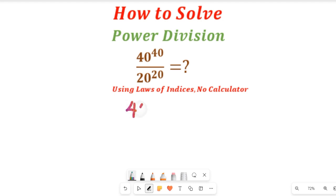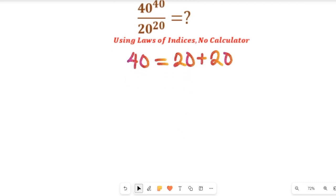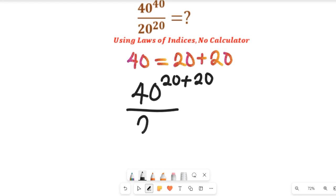Now if you remember that the power of 40 can still be equal to 20 plus 20—20 plus 20 will give us 40—so that means we can simplify the powers of the numerator. That can give us 40 to the power of 20 plus 20, and this will be divided by 20 to the power of 20.